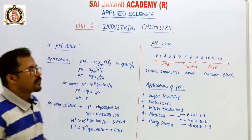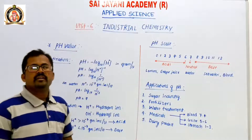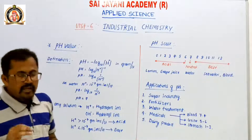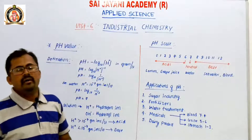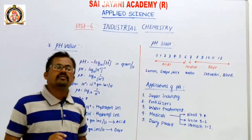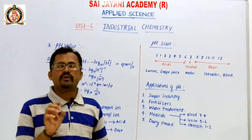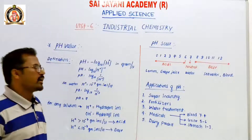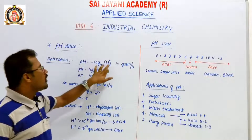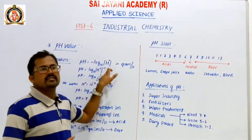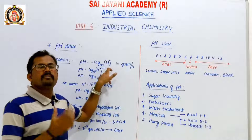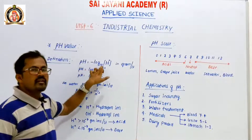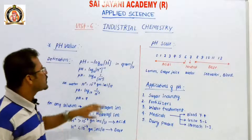Next concept: pH value. Unit number 6 in straight chemistry. pH means 'power of hydrogen.' For any solution, we know that it has hydrogen ions and hydroxyl ions. If the hydrogen ions and hydroxyl ions are equal, the solution is known as a neutral solution. pH, or power of hydrogen, is defined as the negative logarithm to the base 10 of hydrogen ions in a solution, in gram ions per liter.